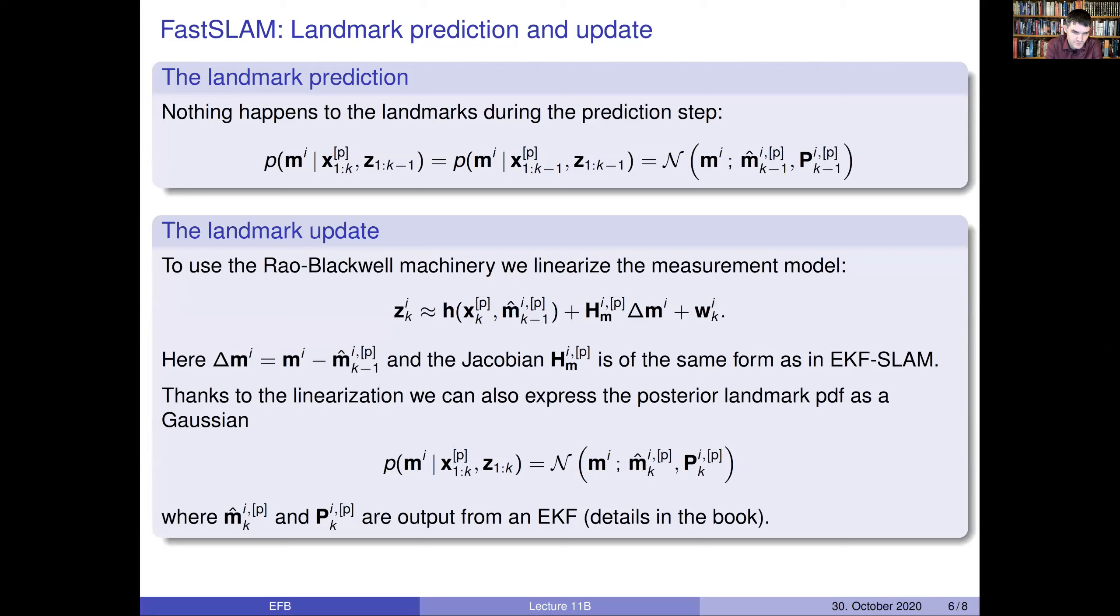But when we receive new measurements, we definitely get new information about the measurements. And to ensure that we can use linearization, we have to linearize this measurement model, which is quite straightforward, you get the Jacobian matrix that is of the same form as you got in EKF SLAM. And then you get the new posterior of each landmark conditional on the pose trajectory, which is evaluated by a straightforward extended Kalman filter.